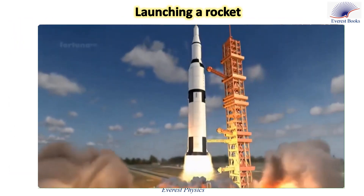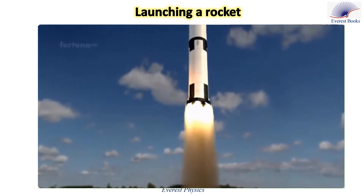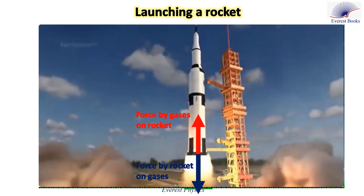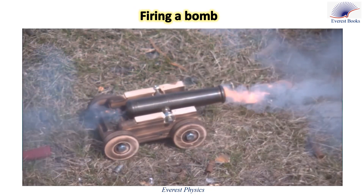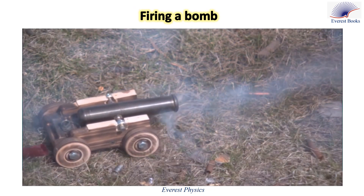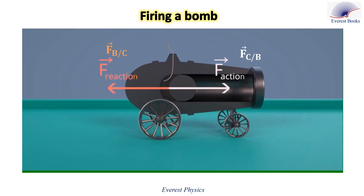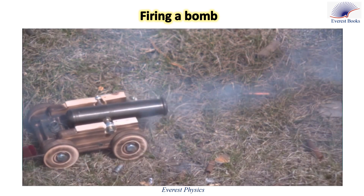Launching a rocket is an example of Newton's third law: the rocket expels hot gases downwards, and these gases exert an equal and opposite upward force that propels the rocket upwards. Similarly, when a cannon fires a bomb, the explosion exerts a forward force on the bomb; according to Newton's third law, the bomb exerts a backward force on the cannon, causing it to recoil.